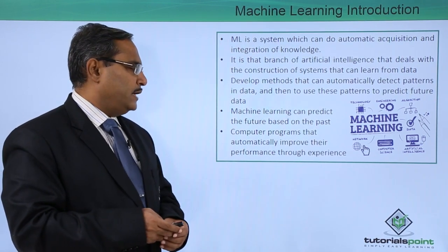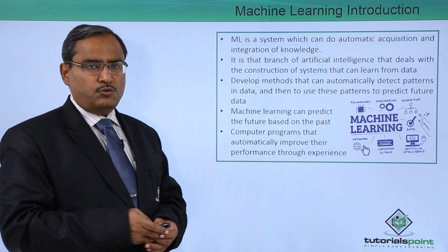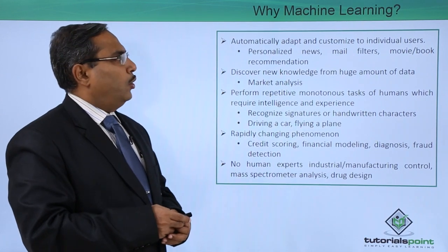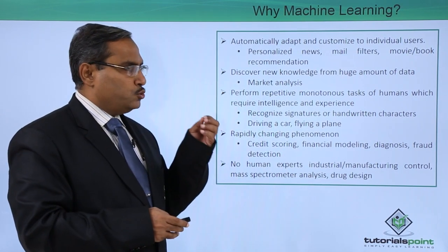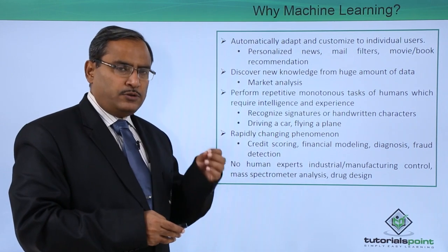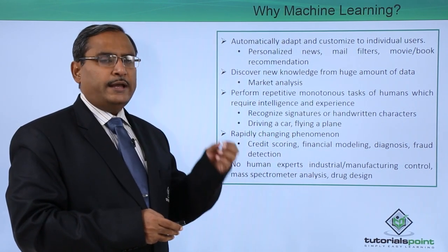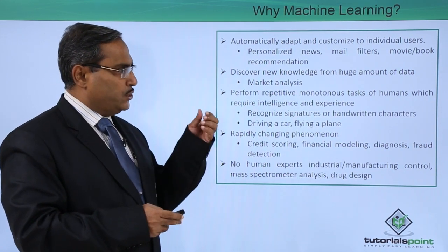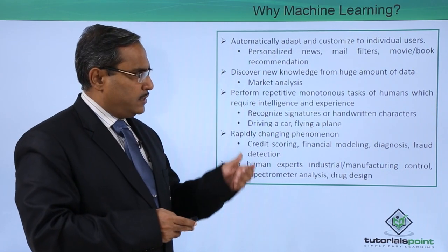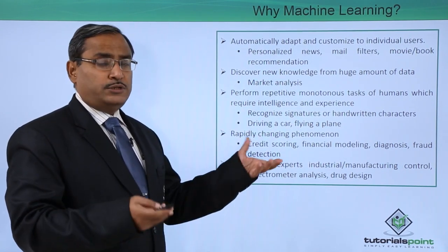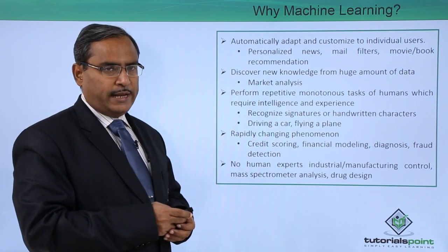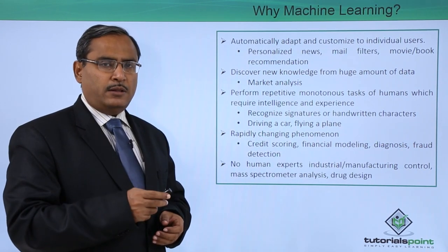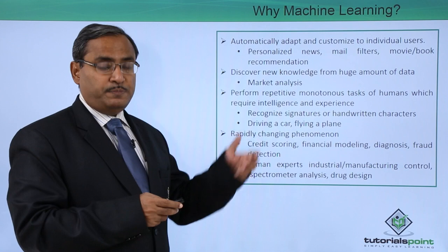Computer programs can automatically improve their performance through experience. Why machine learning? It can automatically adapt and customize to individual users. For individual users, machine learning can have its own specific applications such as personalized news, mail filters, and movie and book recommendations. Mail filters can detect whether a mail is spam or not using machine learning applications.